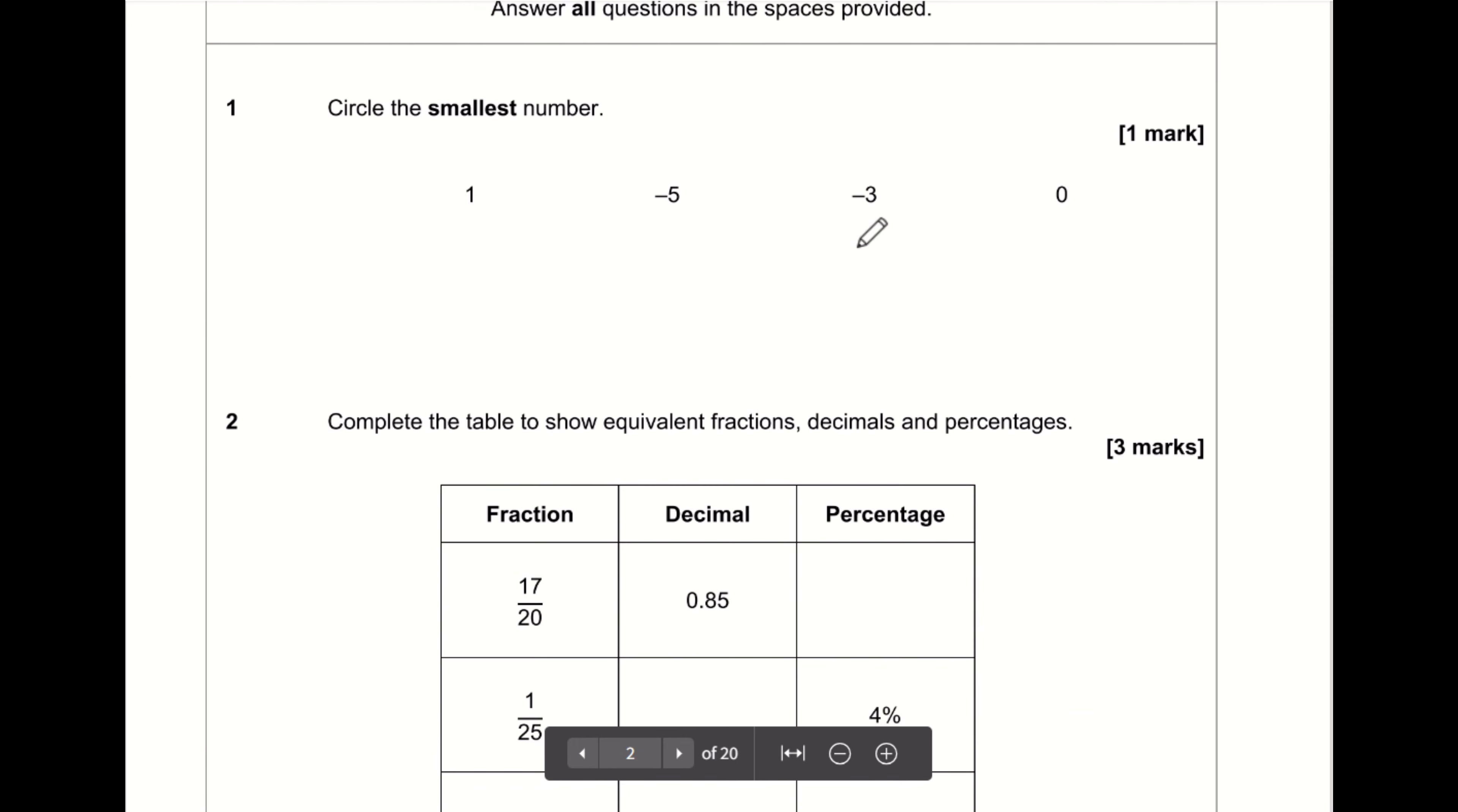So section A, we want to circle the smallest number. We've got a mixture of positive and negative numbers. Negative numbers are always smaller than positive numbers, so we can ignore the 1 and the 0. The smaller of the two numbers is the one which is more negative, so therefore that is negative 5.